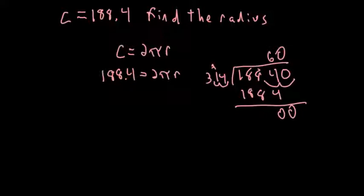So by dividing by pi, I got 60 equals 2r. So my diameter would equal 60. So to find my radius, I just divide it by 2. So radius would equal 30. So that's how you take a circumference and find either the diameter or the radius.